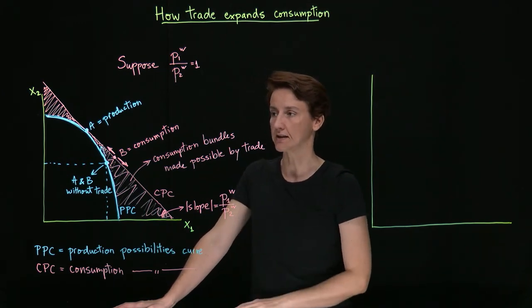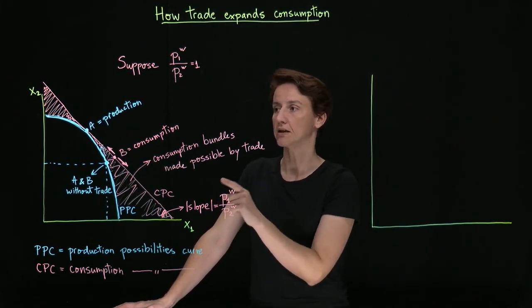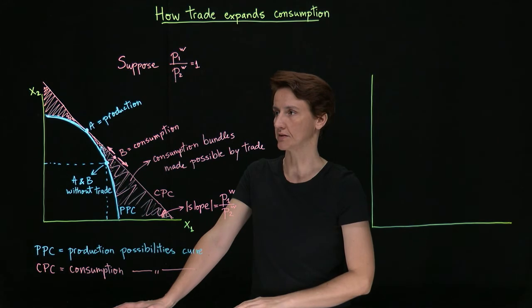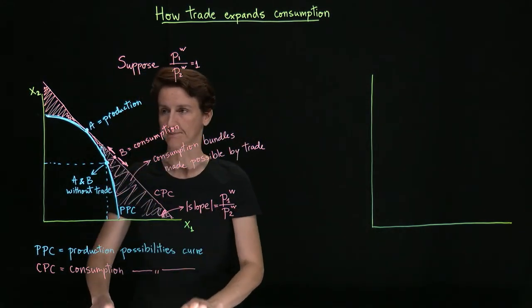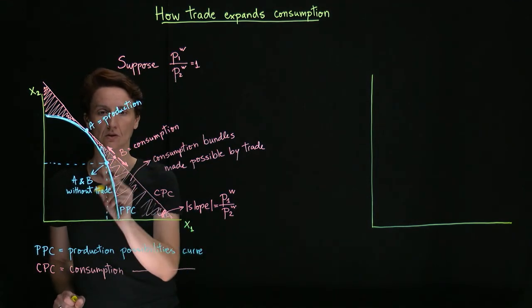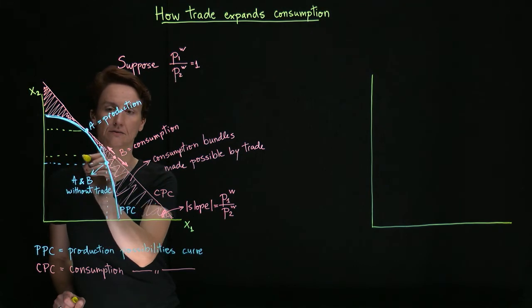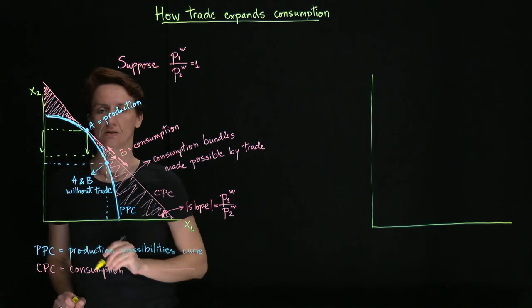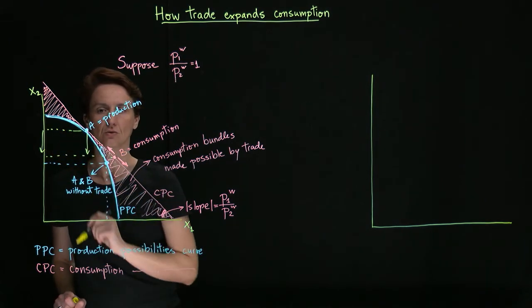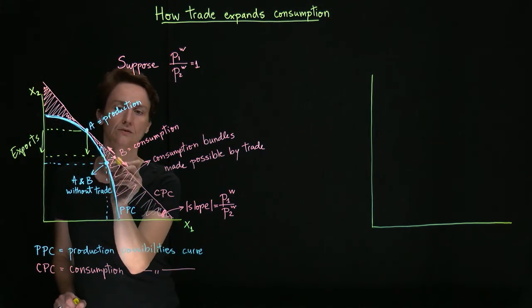The other thing we can see here, if we assume that B is indeed the point of consumption, is we can mark imports and exports of this country. So we could see, for example, that compared to what is produced, a relatively smaller amount of good two is consumed. So that's exports of good two. And more of good one than is produced is consumed.